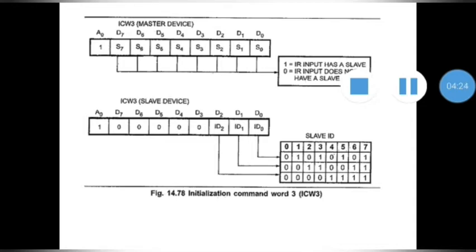Now let's see the format. This is the command word format for ICW3 in case of master mode and in case of slave mode. In master mode, all 9 bits are present. The last bit, A0, is already set to 1. The remaining bits from D0 to D7 are each set to 1 when the corresponding interrupt request input has a slave.